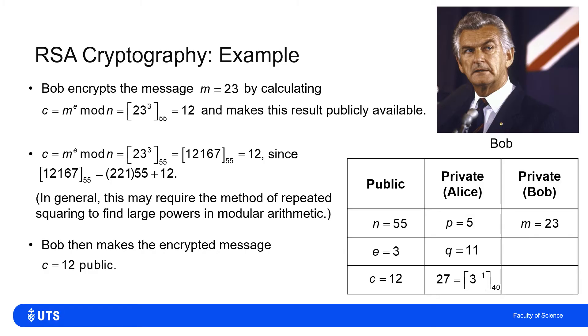Alice still knows the 2 primes, 5 and 11. And she also knows the multiplicative inverse mod phi n, which is 27, which is 3 inverse mod 40. And what Bob knows is just his own message unencoded is 23.